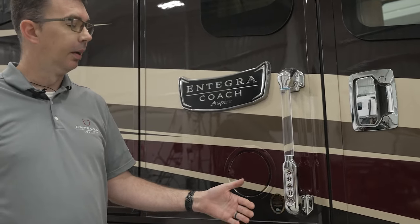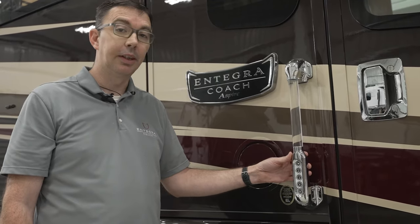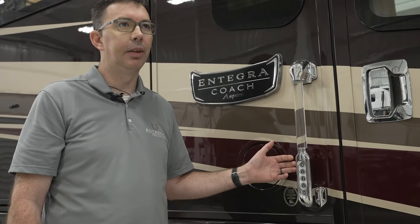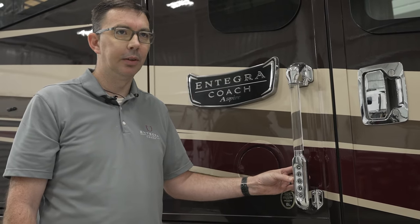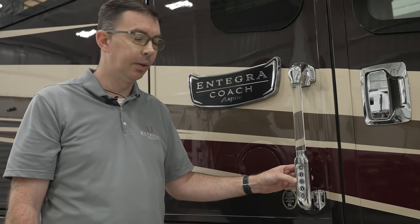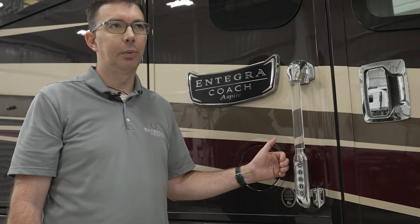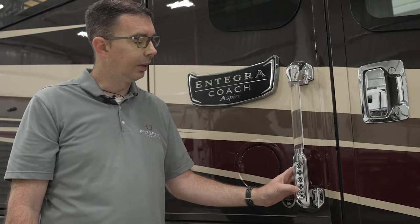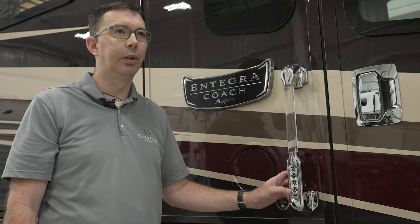Now let's talk about setting up your own access code. You'll want to do this because all units default to the same access code, which is a security concern. The first thing to know is the default authority code — that is the number four pressed five times. To get into programming mode to reset your access code, simply press and hold the three icon for about five to seven seconds until it beeps and flashes.